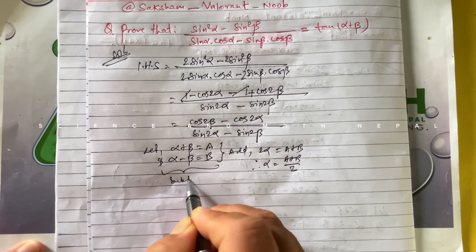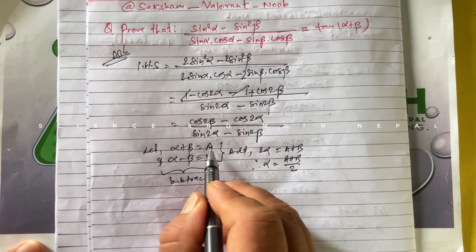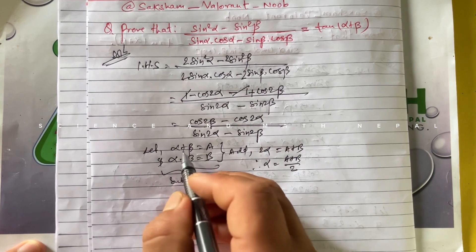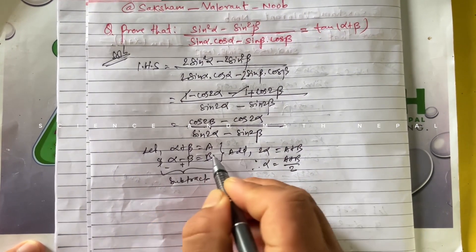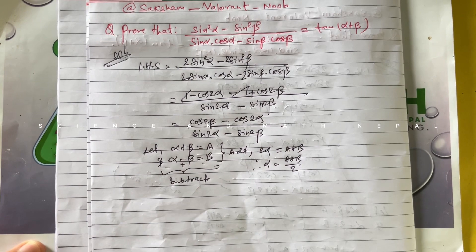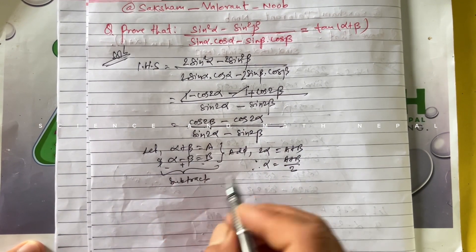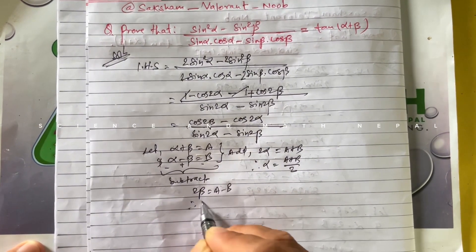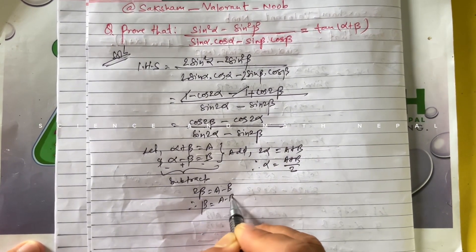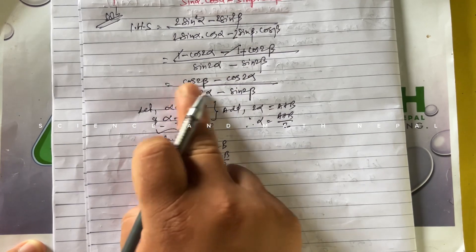Further, if we subtract α - β = b from α + β = a, the two α terms cancel, and β + β gives 2β on the left side. On the right side we get a - b. Therefore β = (a - b) / 2.